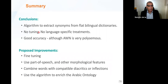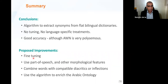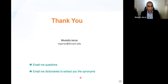In conclusion, we presented an algorithm to extract synonyms from flat bilingual dictionaries, which can be applied to other languages since we did no language-specific tuning. We reached good accuracy even with a challenging resource. In the future, we plan to fine-tune using part-of-speech and other morphological features. For Arabic specifically, we need to handle diacritics and inflections. We also want to apply the algorithm to enrich the Arabic ontology, especially given our many bilingual dictionaries. Thank you very much.